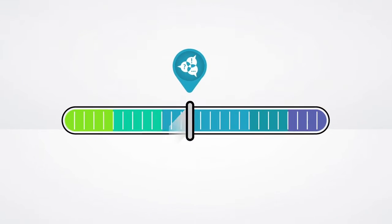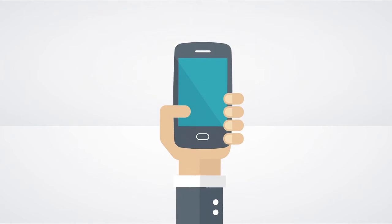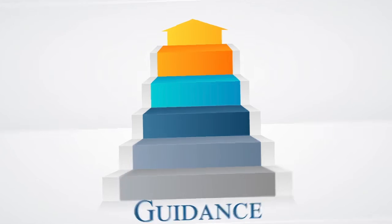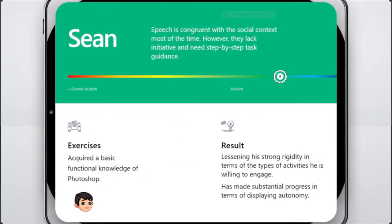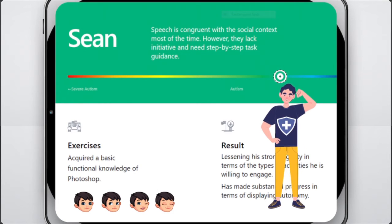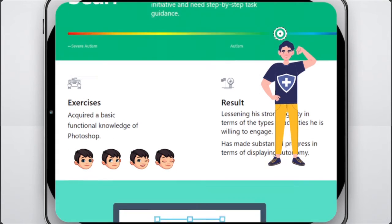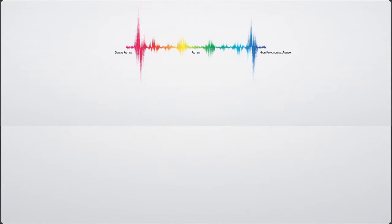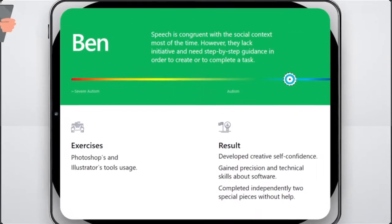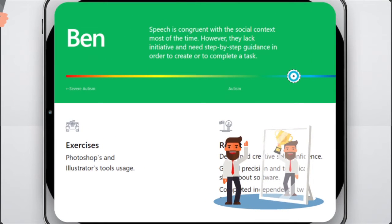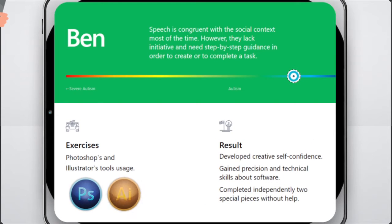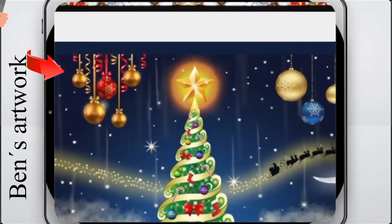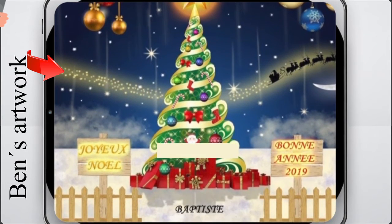Towards the middle of the spectrum, we have Sean and Ben, whose speech is congruent with the social context most of the time. However, they lack initiative and need step-by-step task guidance. Sean displayed progress in emotion recognition effectiveness. He also reduced his strong rigidity in terms of the types of activities he is willing to engage in. At the same time, he acquired basic knowledge of Photoshop to apply the fundamental tools in context. With Ben, the proposed exercises in Photoshop and Illustrator helped him develop creative self-confidence. Notably, Ben still generally needs to be guided through the creative process. However, there were two special pieces that he completed independently, without help — and since it evidences creative freedom and autonomy, it needs to be celebrated.